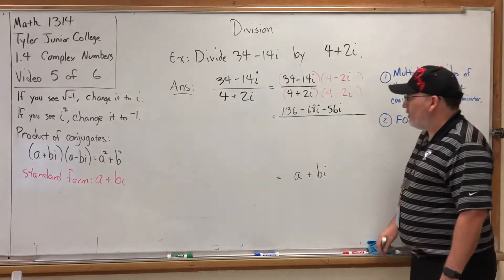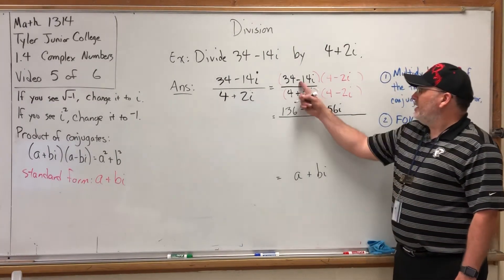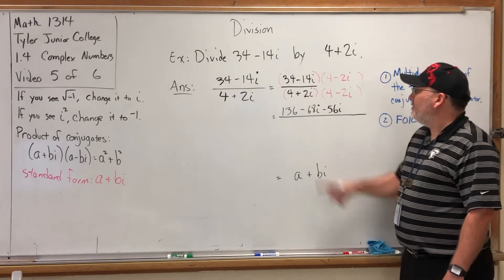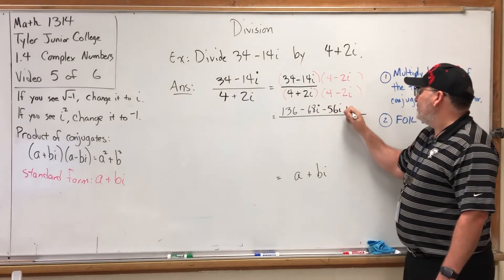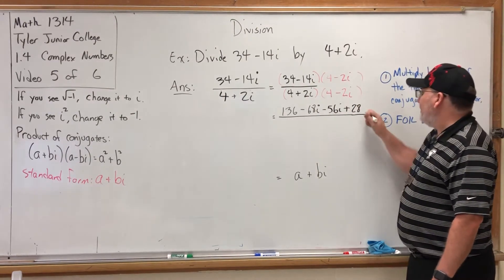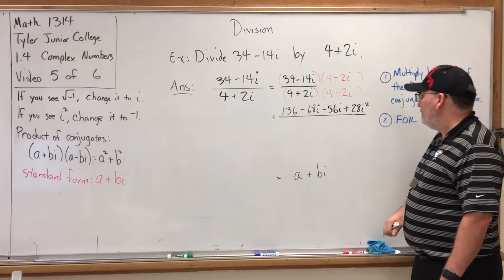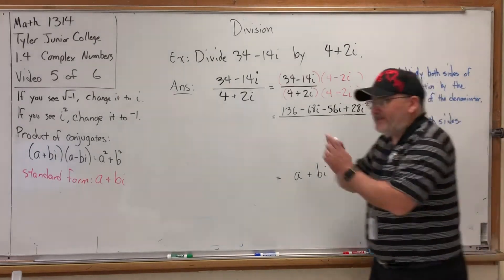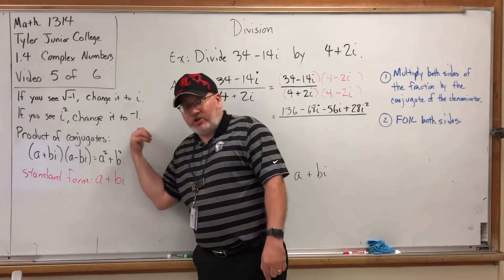Let's fix that right now. I see an i², we're supposed to change it to -1. So what is the net result of changing the i² to -1?